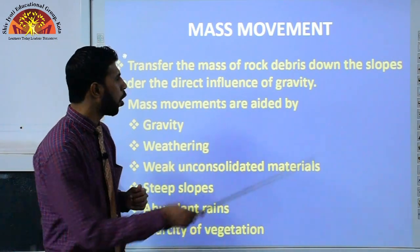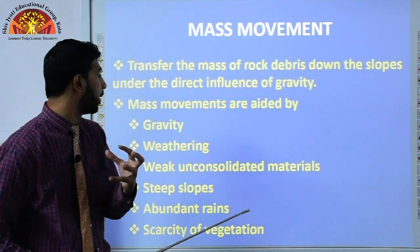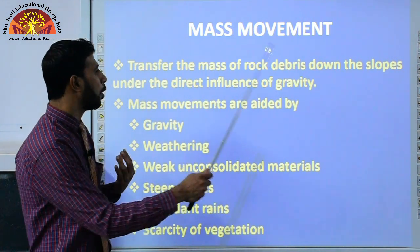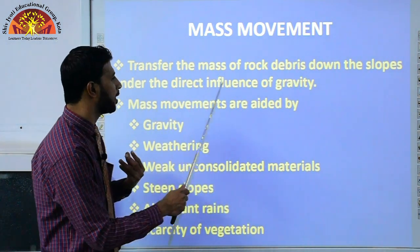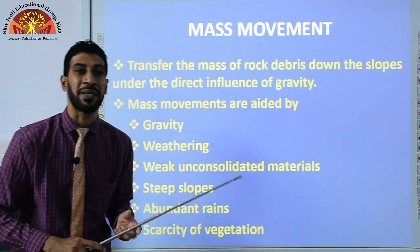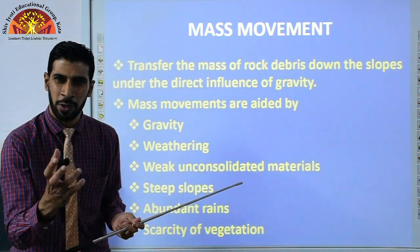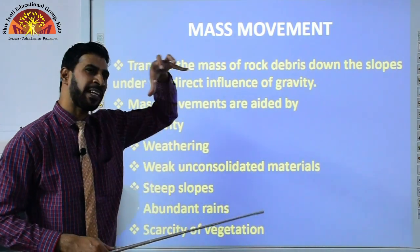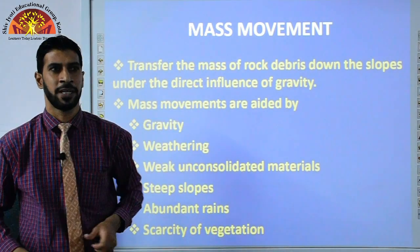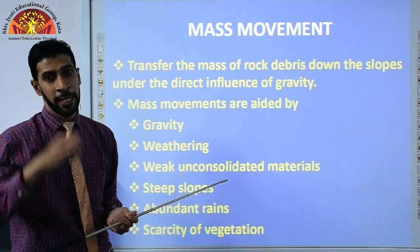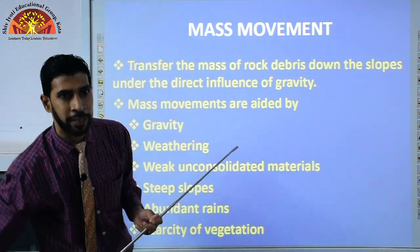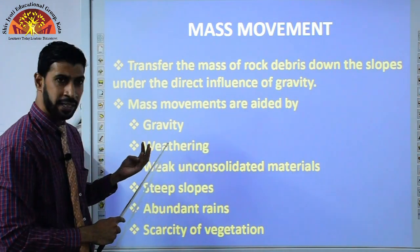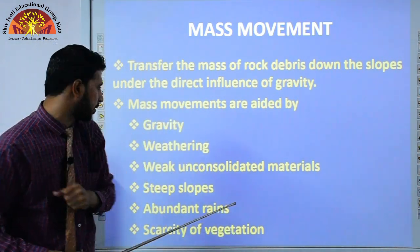Mass movement refers to the transfer of mass of rock and debris down slopes under the direct influence of gravity. Debris are the small pieces of broken rock. These break off from high altitudes and come down because of gravity. Mass movements are aided by gravity — rock pieces break and scatter downward. Weathering also makes materials weak, causing them to break and scatter.